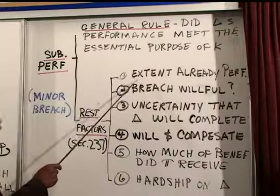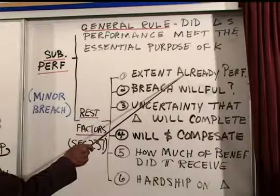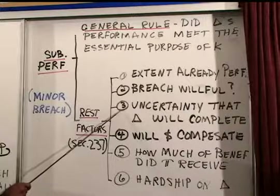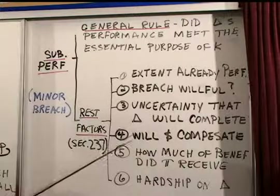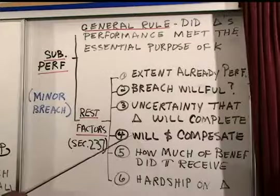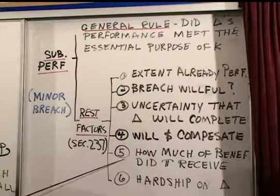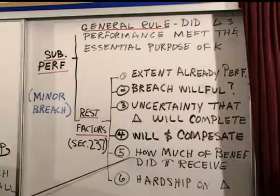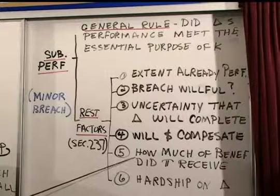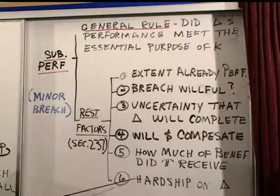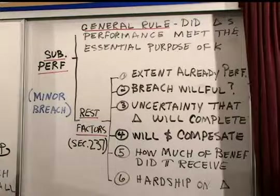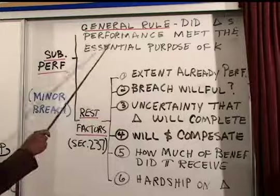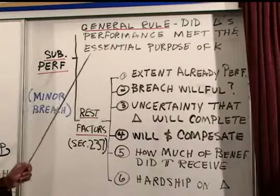The six factors from Restatement 237 are: one, the extent to which the defendant has already performed; two, was the breach willful, negligent, or innocent; three, the uncertainty that the defendant will complete the job; four, will dollars compensate the injured party; five, how much of a benefit has the plaintiff already received; and six, how much of a hardship is going to be imposed on the defendant if you call this a material breach rather than a minor breach. These are the factors you'd use to analyze substantial performance unless it's very clear.